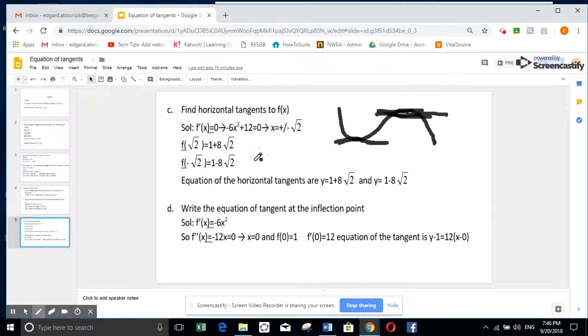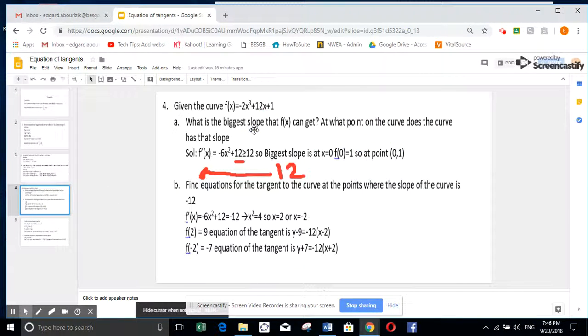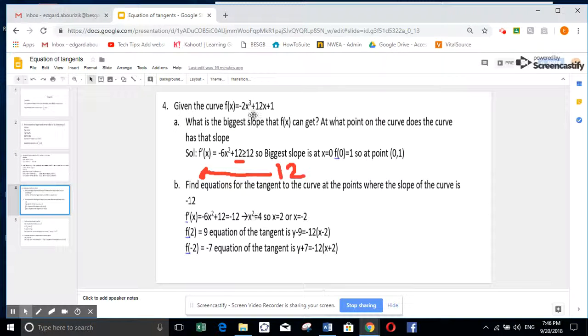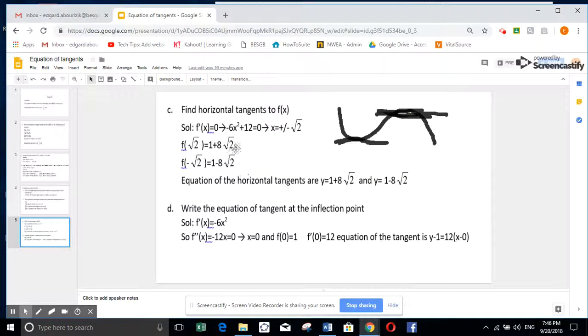f prime of x, let us go back. It is minus 6x squared plus 12. You equate it to 0 because horizontal. I have 2 points plus or minus radical 2. I replace in the equation. One time I replace here by minus radical 2. One time by plus radical 2. I get these two y. So if I want to write now the equation of the tangent, you all know.